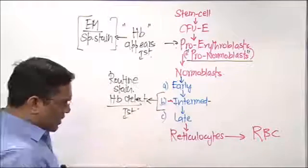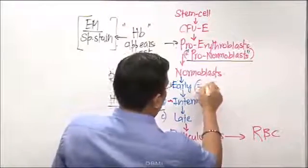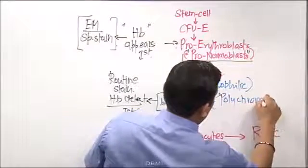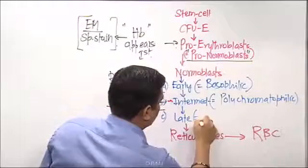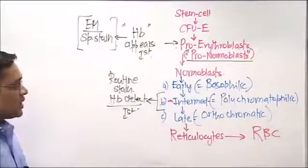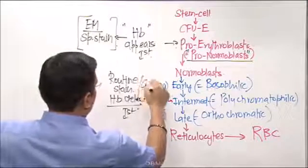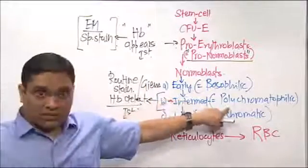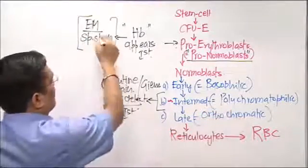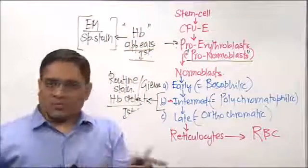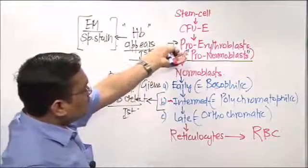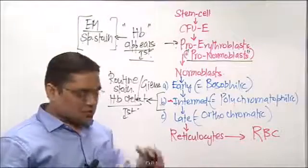Remember the other names: early normoblast is also called basophilic normoblast, intermediate is polychromatophilic normoblast, and late is orthochromatic normoblast. If the examiner mentions routine staining or Giemsa staining, the answer is intermediate or polychromatophilic normoblast. But if the examiner asks when hemoglobin 'first appears,' the answer is pro erythroblast or pro normoblast — the earliest stage of actual appearance.